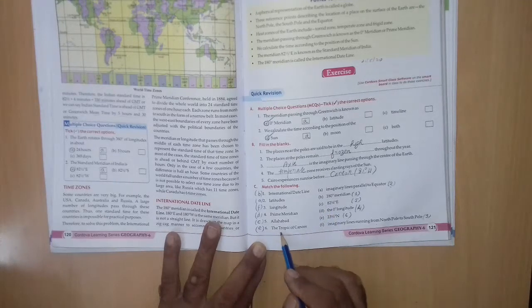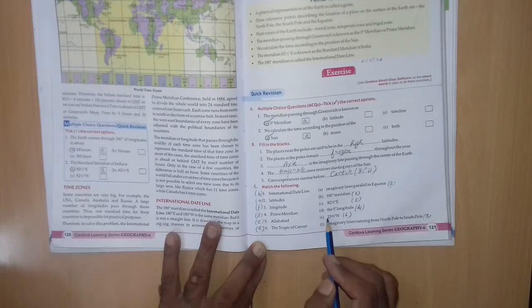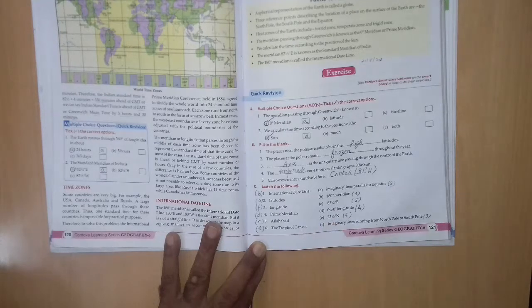Next, 6th, the tropic of cancer. It is E, 23 and half degree north.